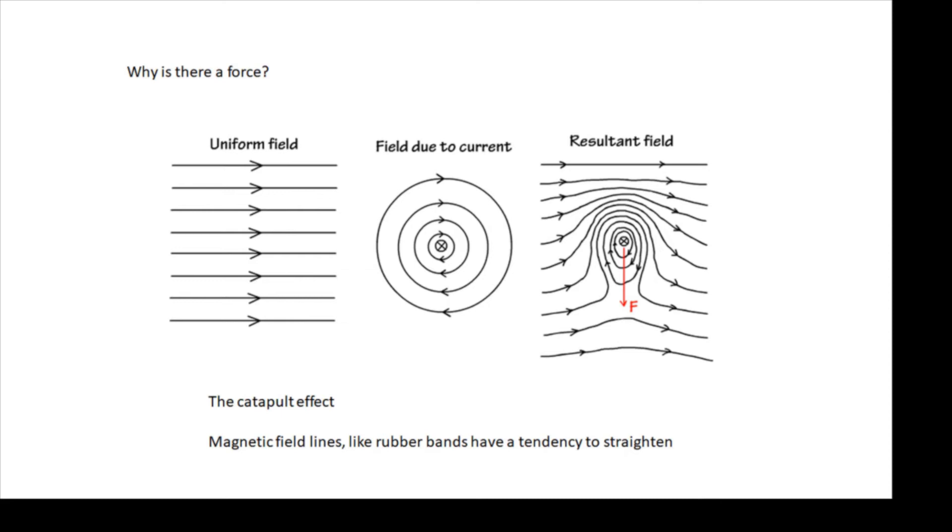Magnetic field lines like rubber bands have a tendency to straighten. And so what's going to happen is that they are going to push the wire down. It's due to the interaction between the two fields.